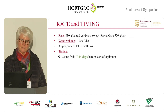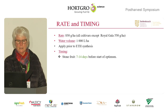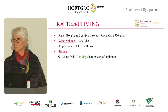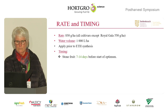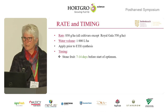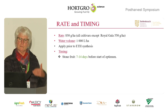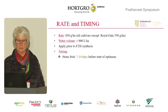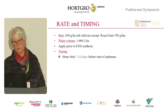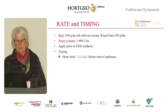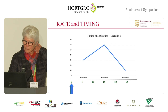On rate and timing, which differ between cultivars: the normal rate is 830 grams per hectare, used on all cultivars except Gala, where you can go to 550 grams. Water volume should be around 1,000 liters per hectare for good coverage. Critically, the product must be applied before the start of ethylene production by the fruit or tree. For stone fruit, that means 7 to 14 days before the start of optimum or first major pick, though it depends on the scenario.